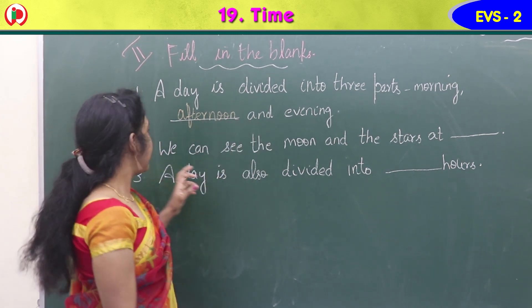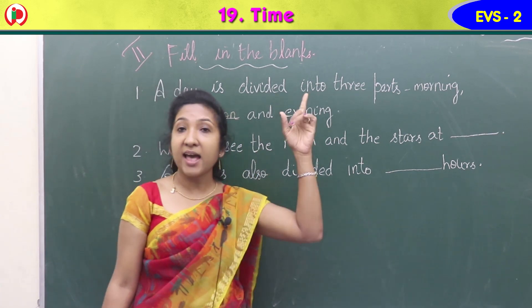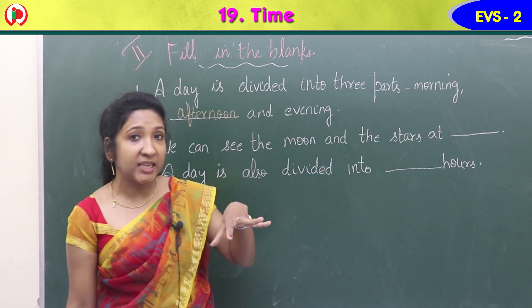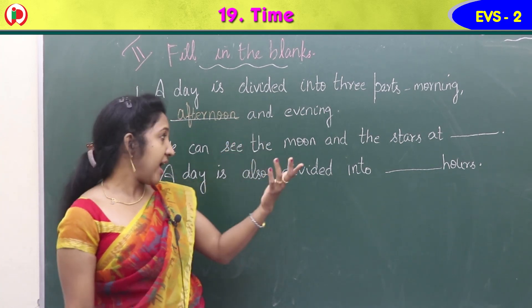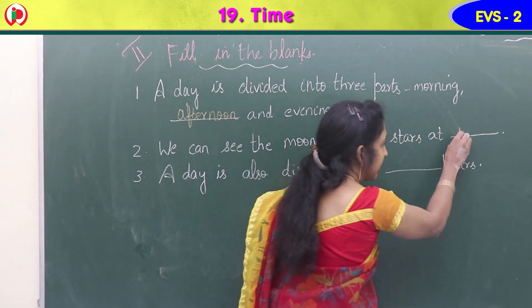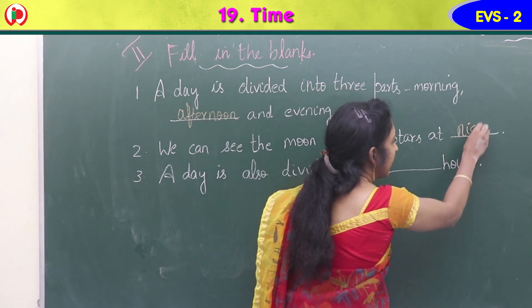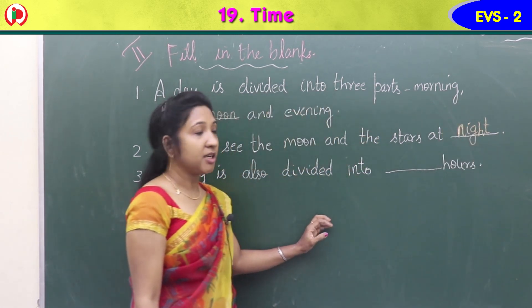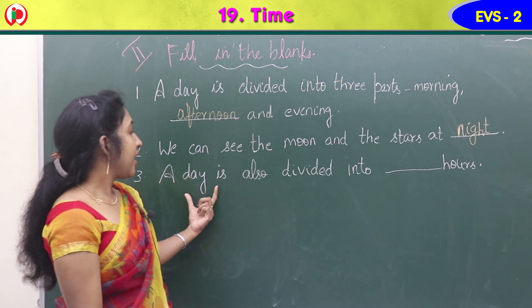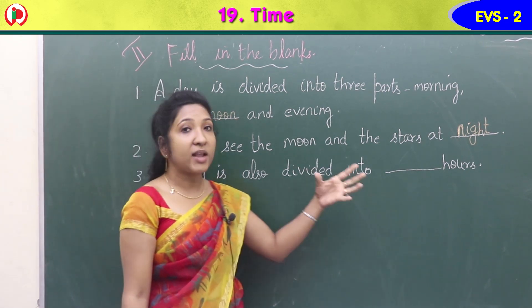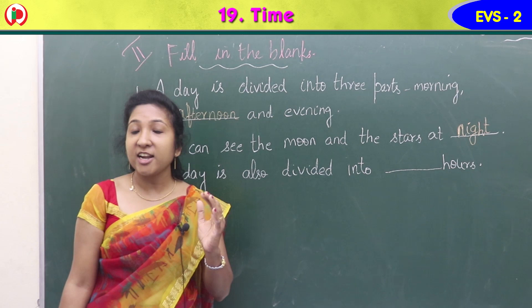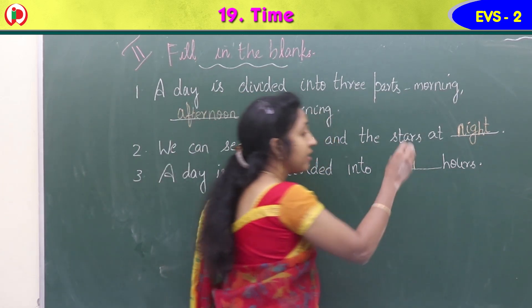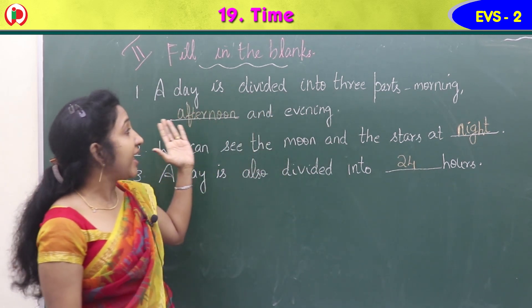Second blank: we can see the moon and the stars at — what time can we see the moon and stars? In the daytime or at night time? We can see the moon and the stars at night. N-I-G-H-T, night.